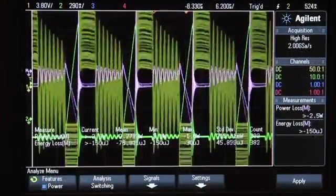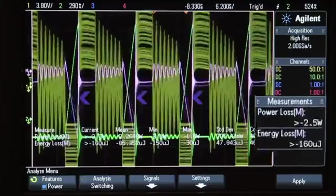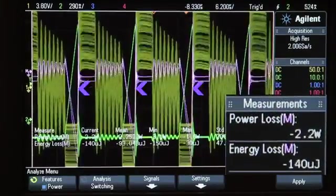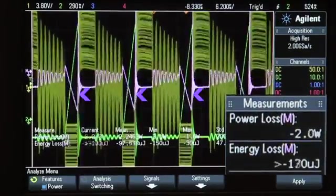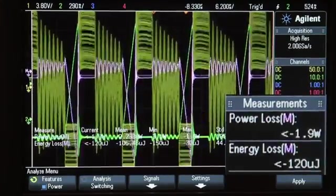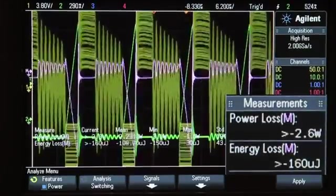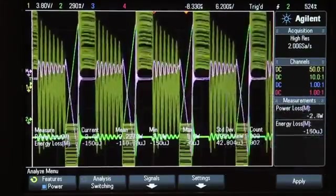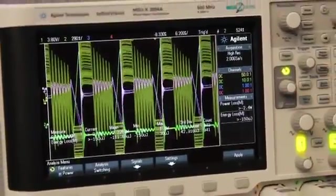If we look at the Power Loss waveform, the maximum instantaneous power loss occurs during transitions from the on state to the off state of the switching device. The Power Measurements option provides a fully automatic solution to make this complex measurement with a single press of a button.